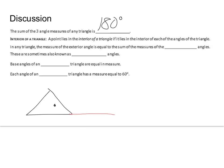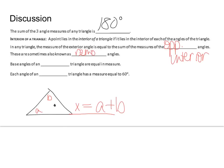Those opposite interior angles are also sometimes known as remote interior angles. I just drew an exterior angle. The measure of x equals a plus b — filling in the word 'remote' there.